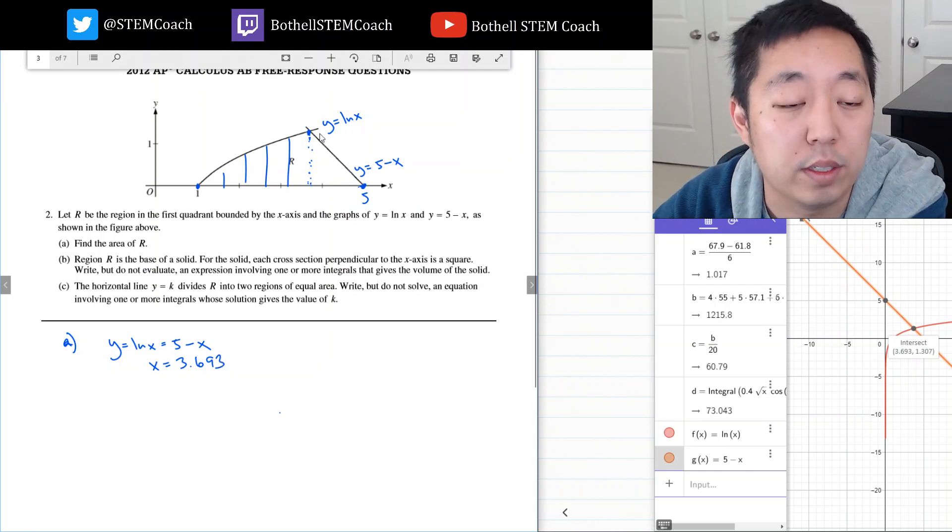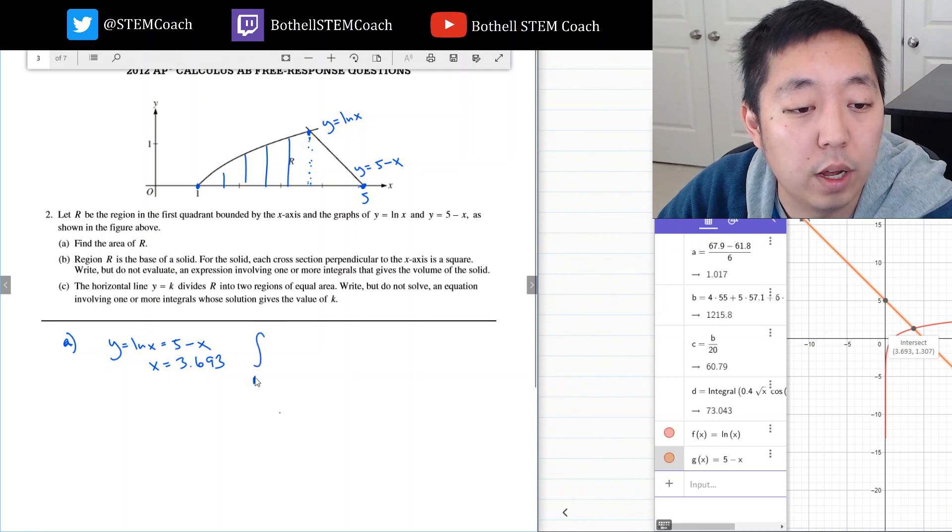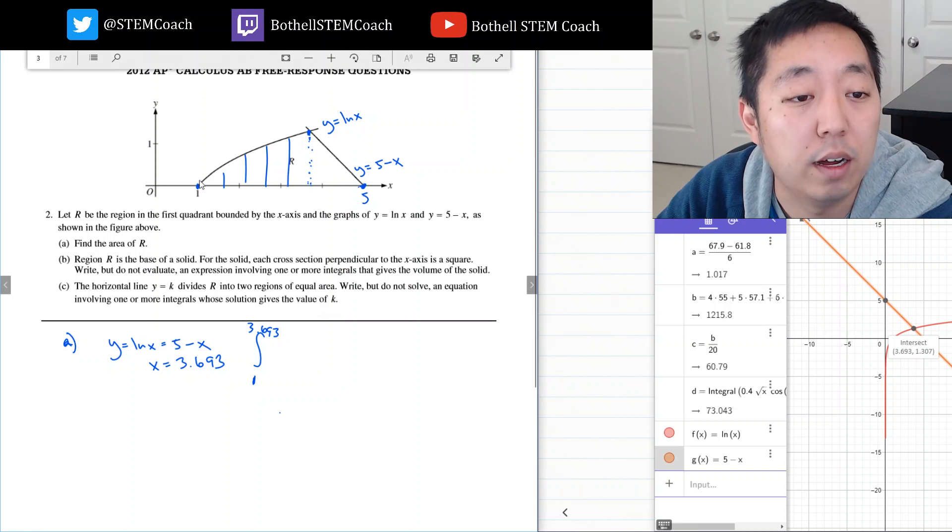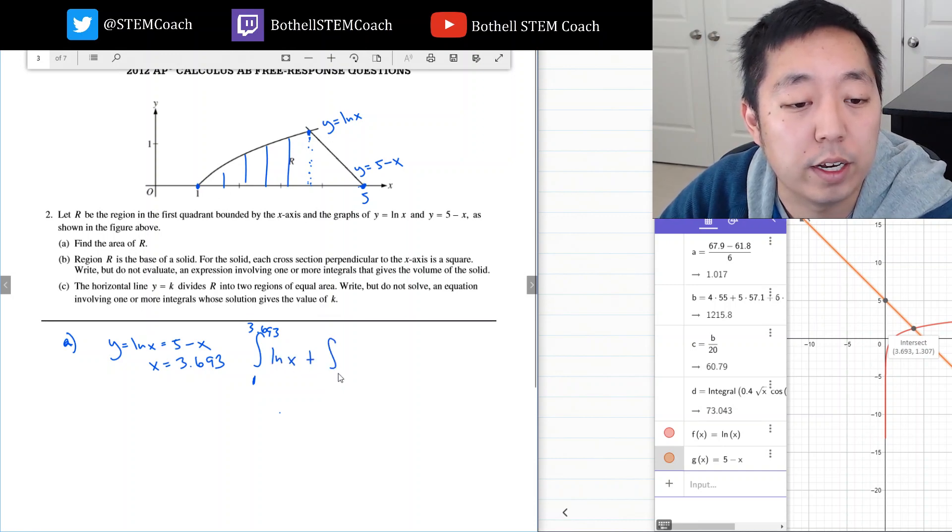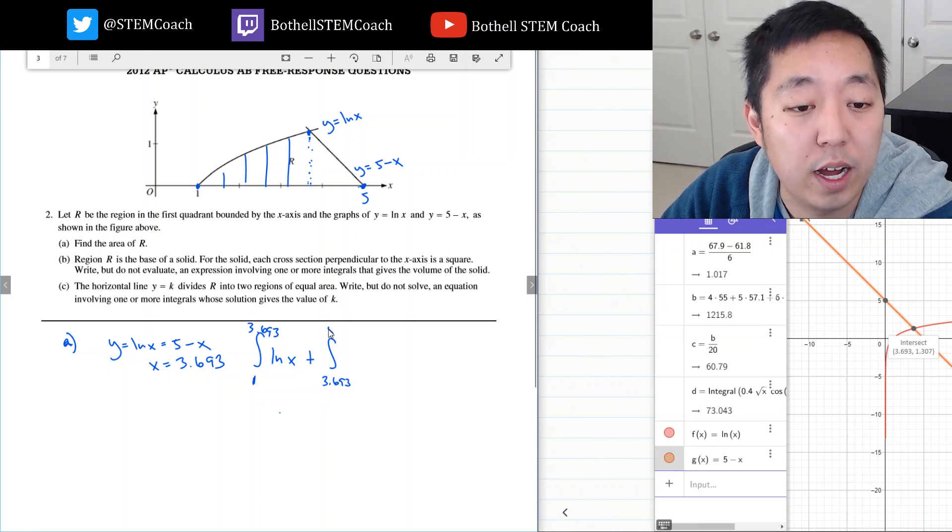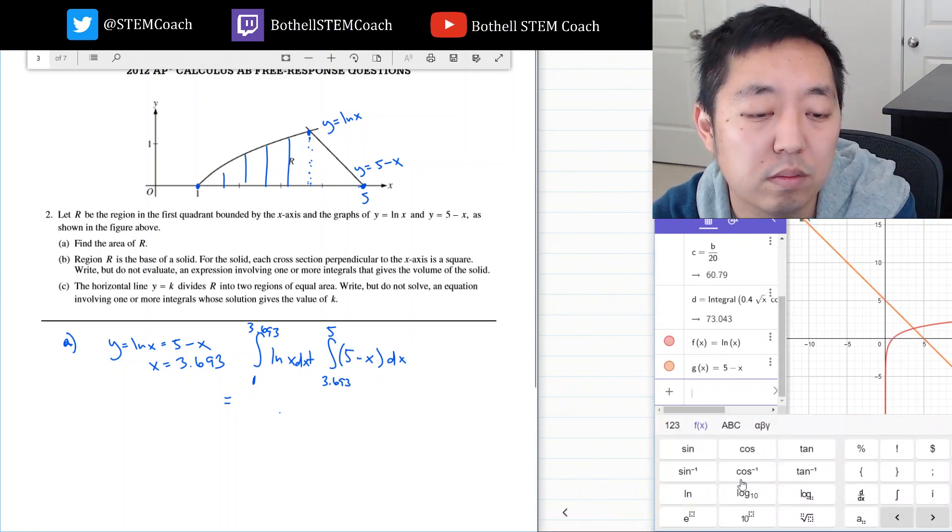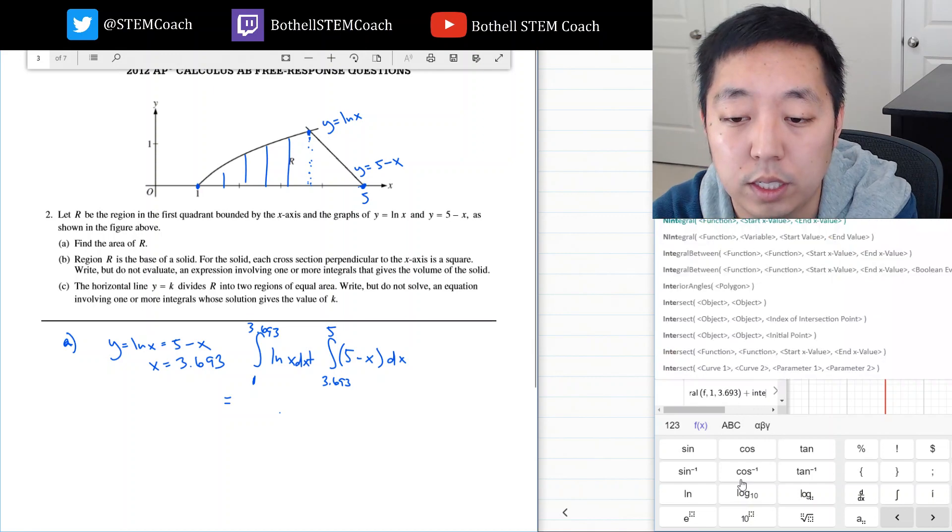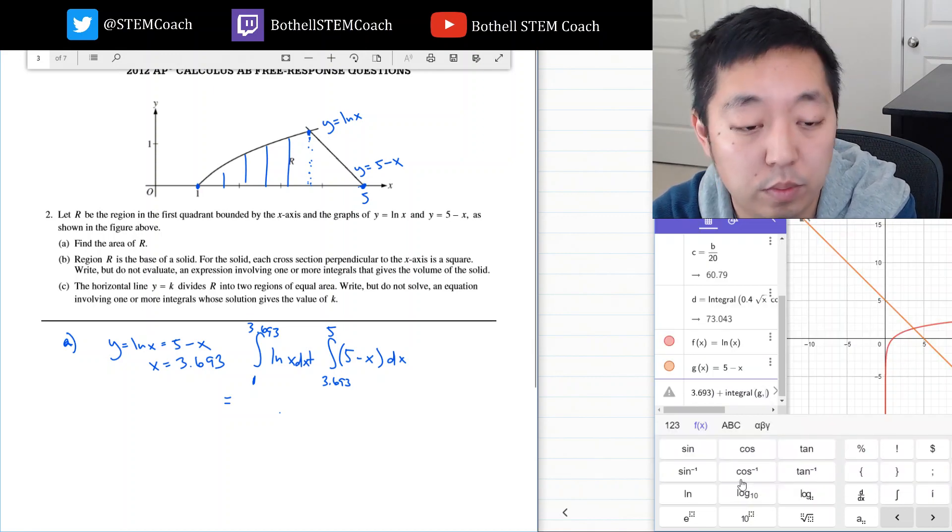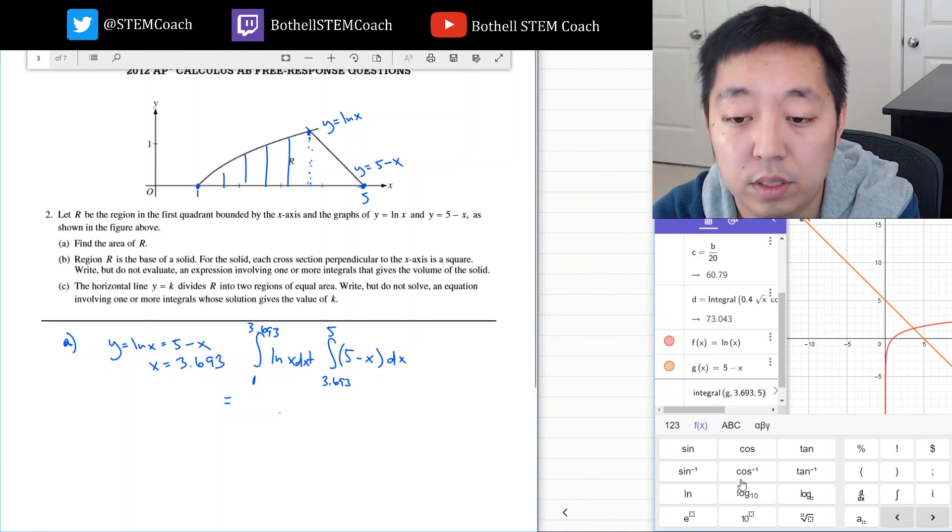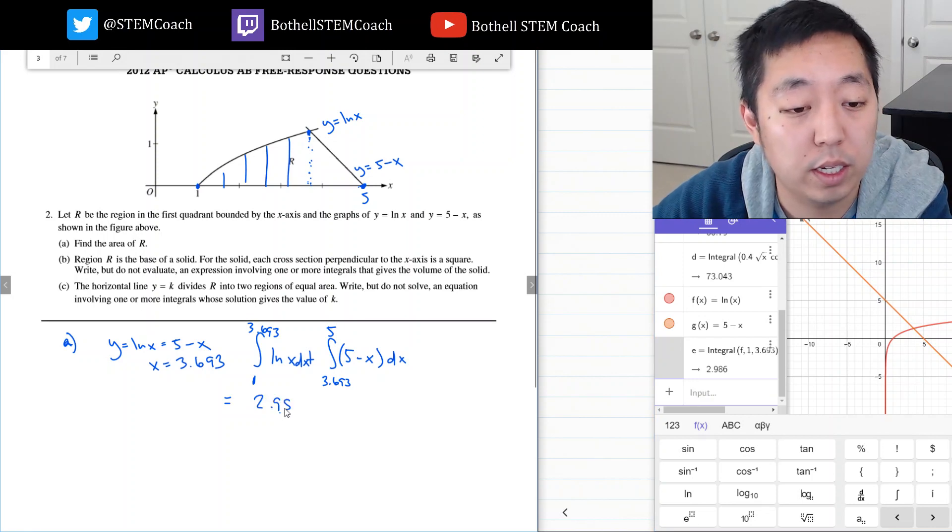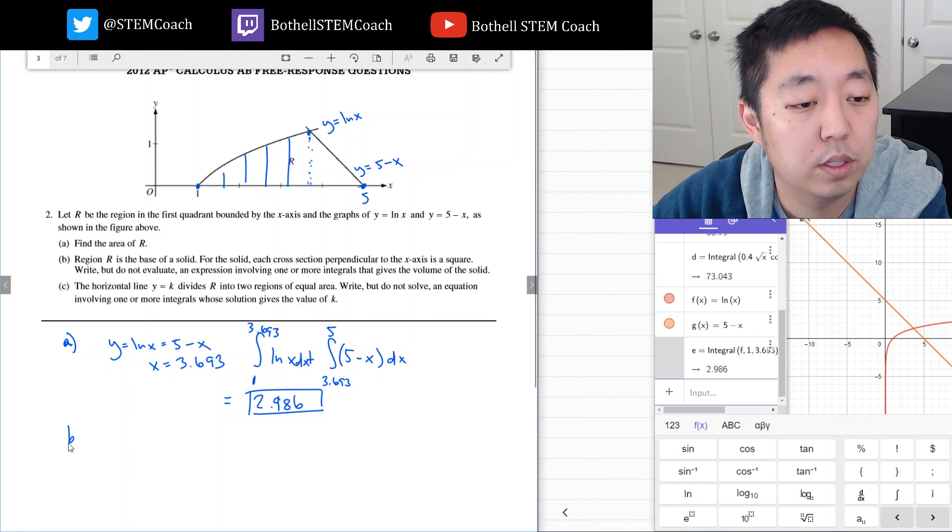The y value doesn't matter in this case. What I want to do then is the integral from 1 to 3.693 of ln x, and then I want to integrate from 3.693 to 5 of 5 minus x dx. This would be the total area. Let's do that numerically. The integral of f from 1 to 3.693 plus the integral of g from 3.693 to 5. This totals to be 2.986.